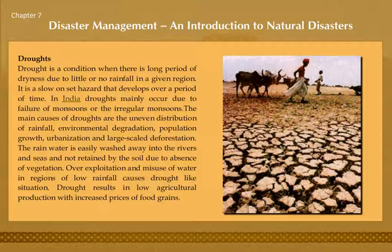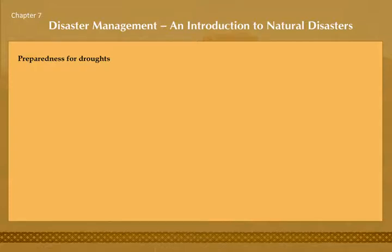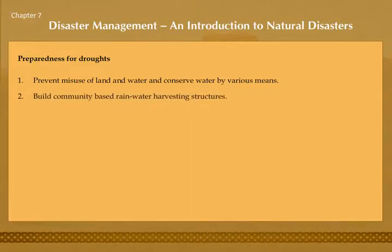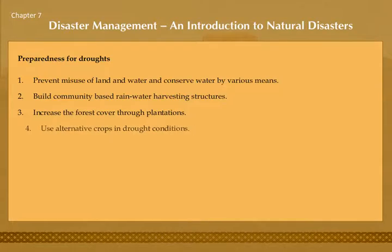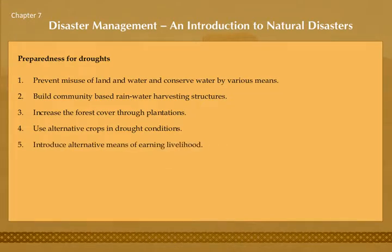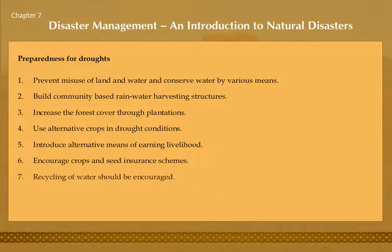Drought results in low agricultural production with increased prices of food grains. Preparedness for droughts: 1. Prevent misuse of land and water and conserve water by various means. 2. Build community-based rainwater harvesting structures. 3. Increase forest cover through plantations. 4. Use alternative crops in drought conditions. 5. Introduce alternative means of earning livelihood. 6. Encourage crops and seed insurance schemes. 7. Encourage recycling of water.